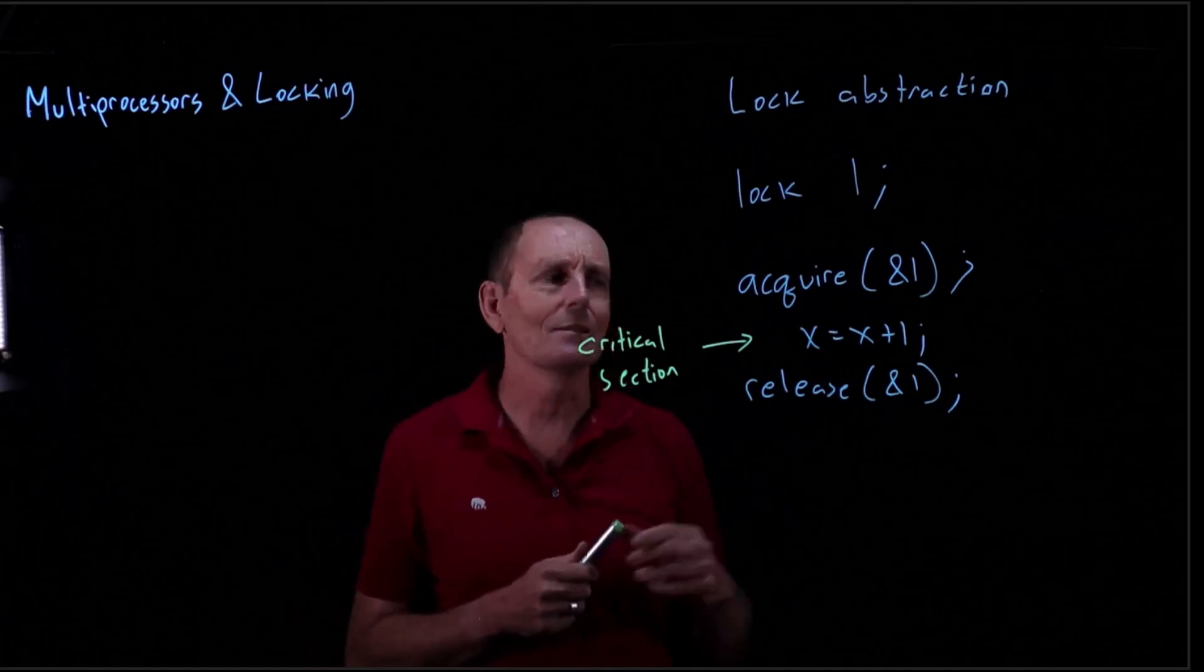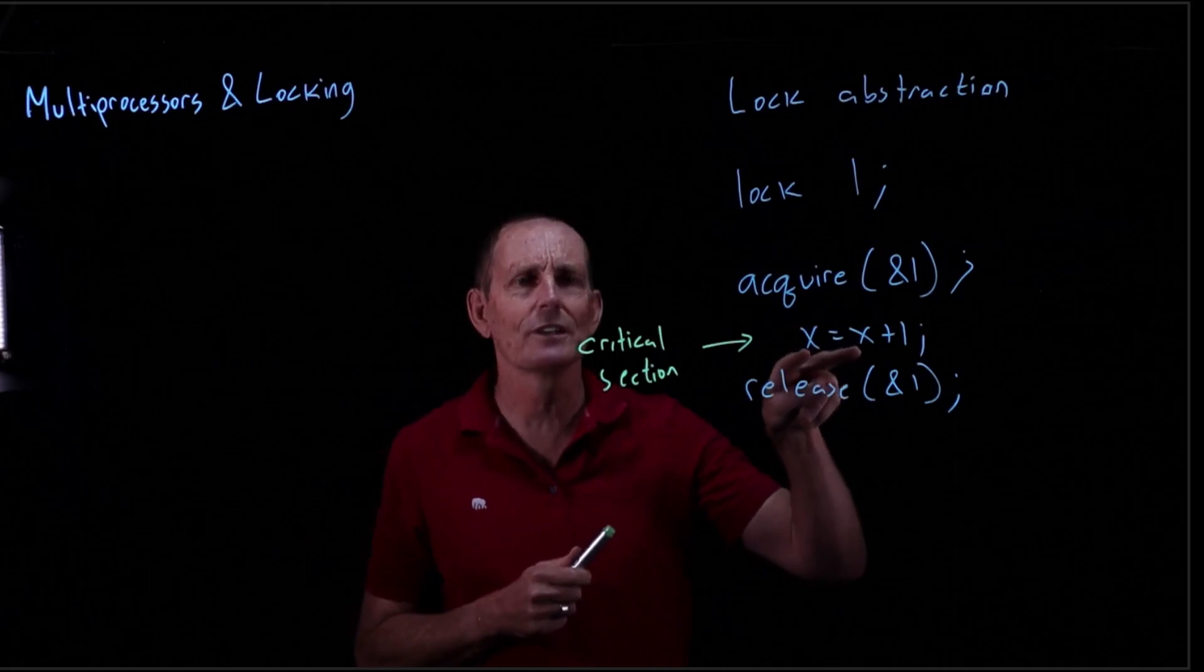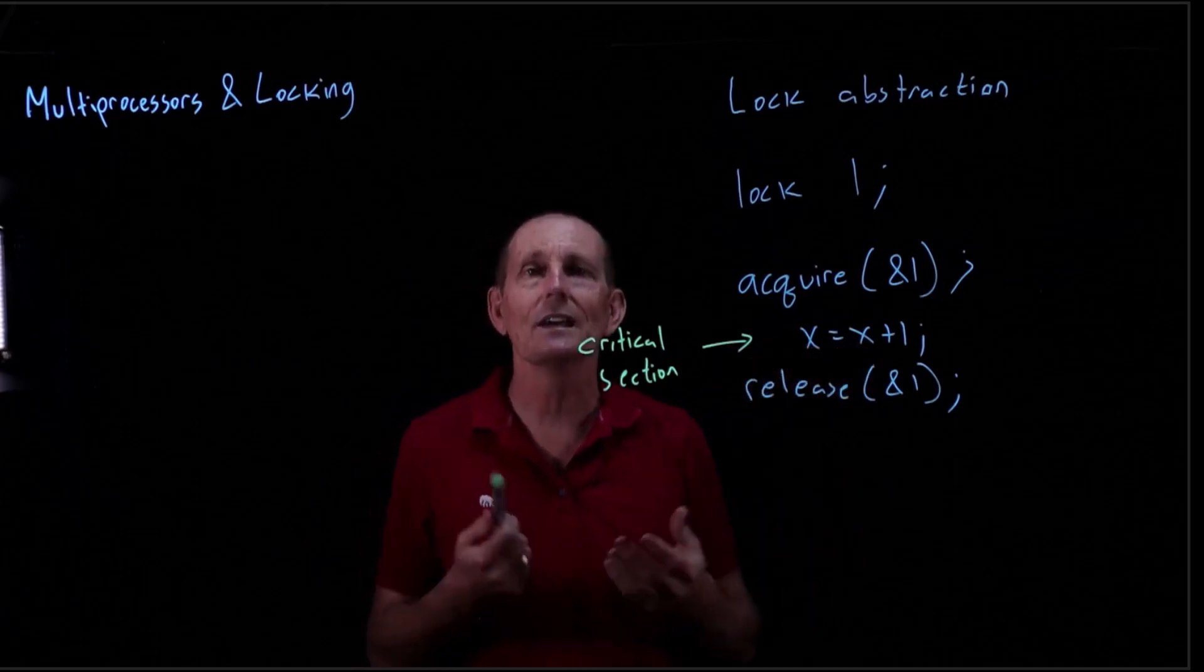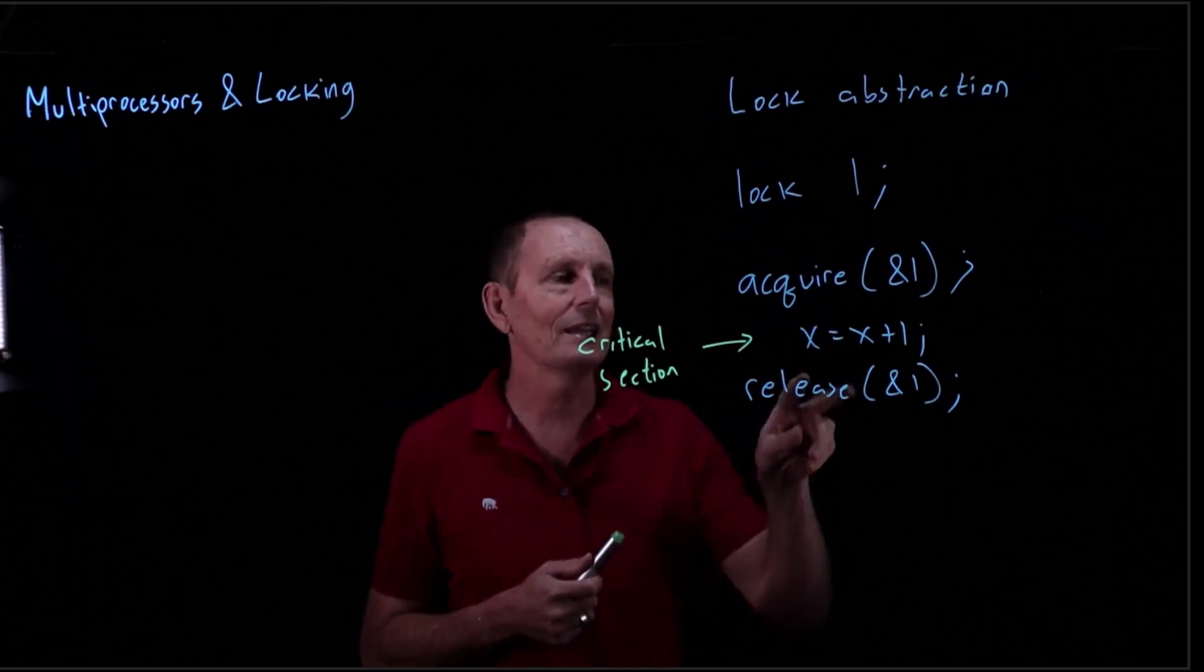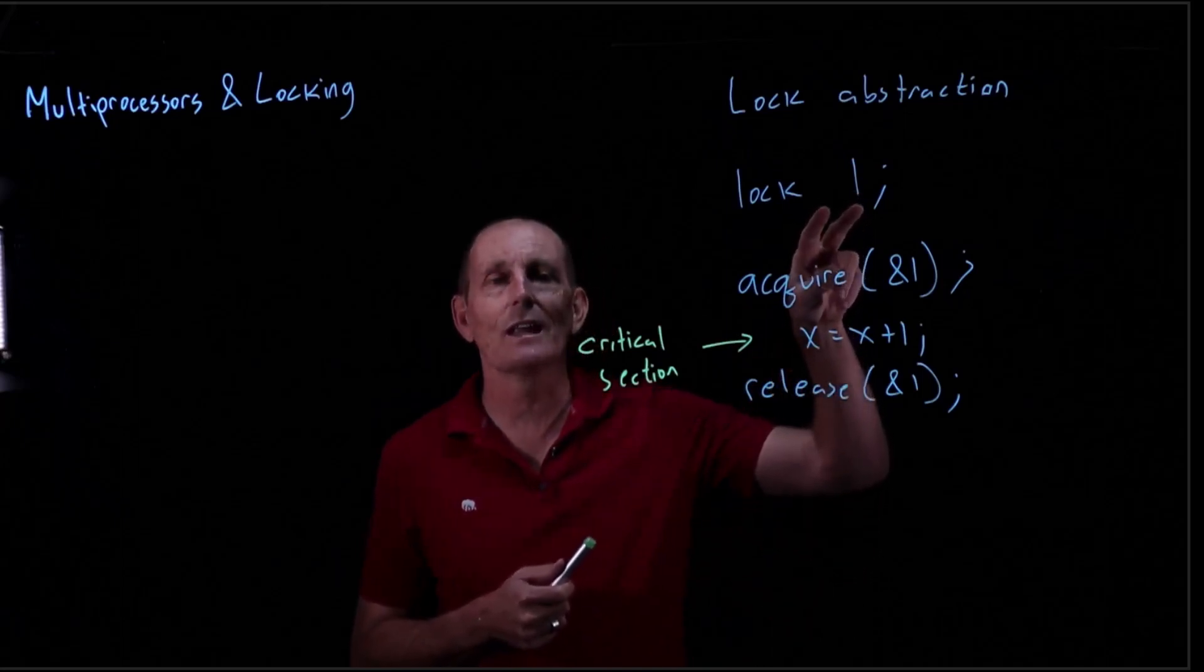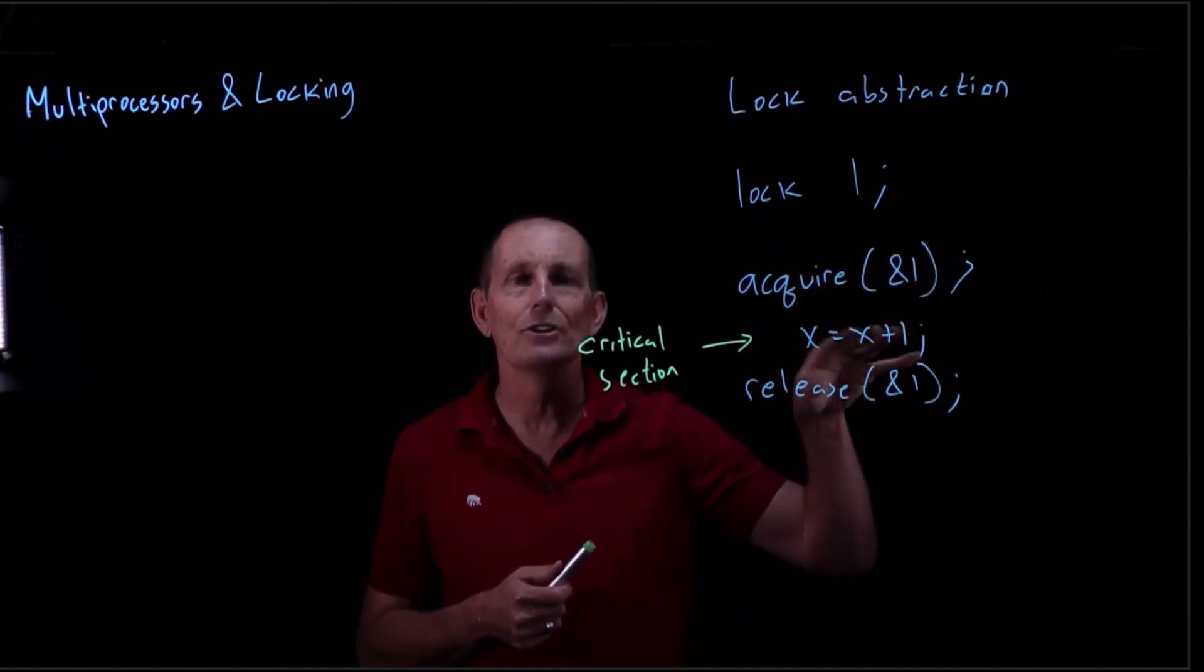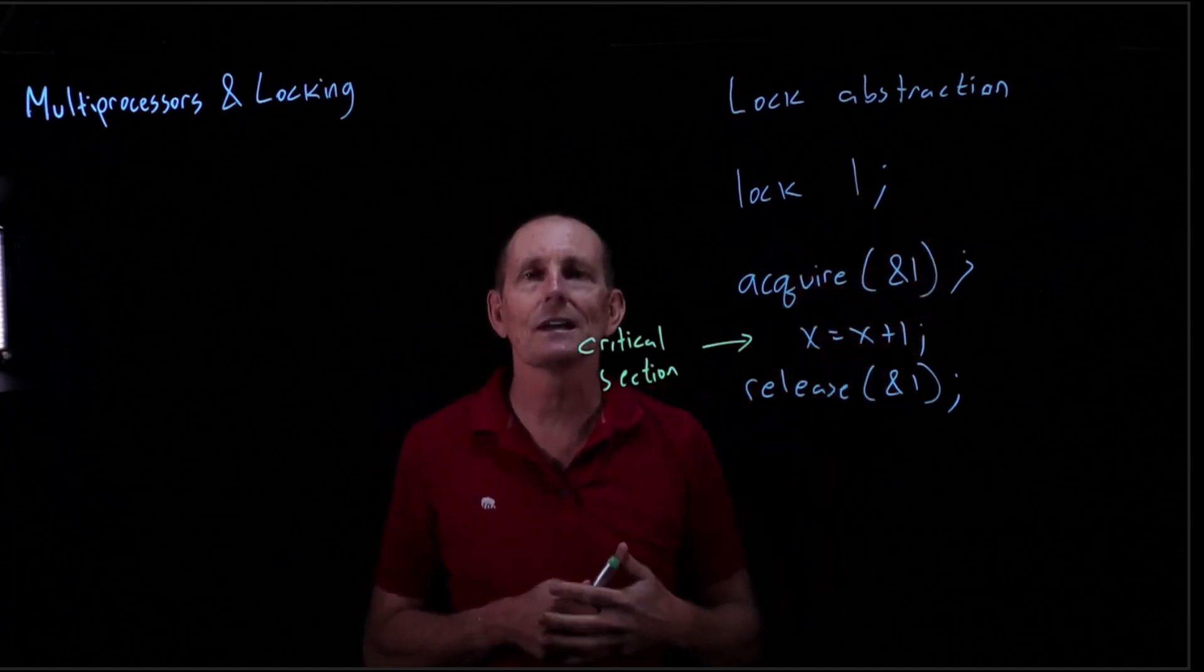The locks are not implicitly tied in any way to the variables that you're trying to manipulate. So here we're trying to manipulate x. It's up to the programmer to plan and make sure we have a lock for x. So we might not call this lock L, we might call this the x lock, and acquire the x lock, do things to x, and then release the x lock.